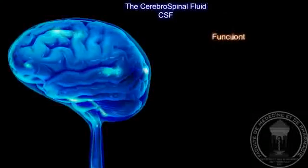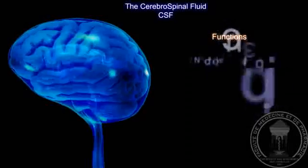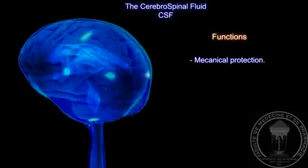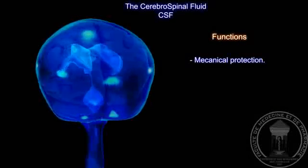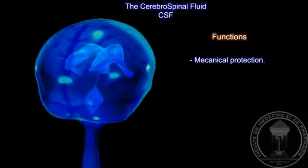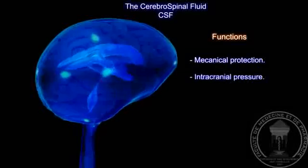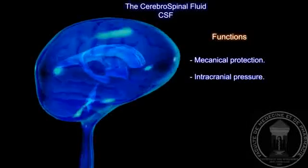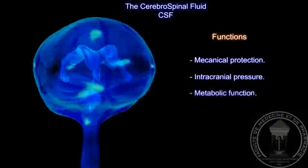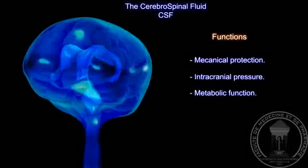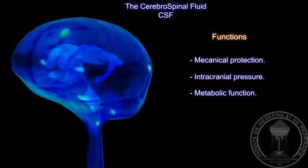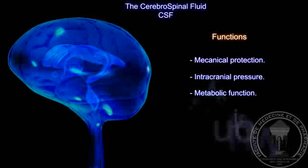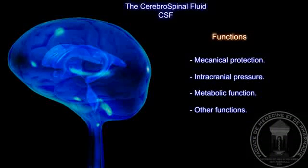The CSF ensures the protection of the central nervous system against mechanical shocks and vibrations. It plays an important role in the regulation of intracranial pressure. It participates in the cerebrometabolic processes by regulating the exchange of substances and provides many other functions as well.